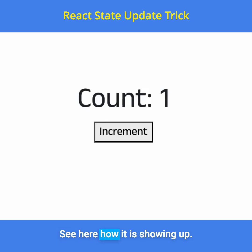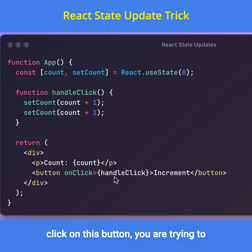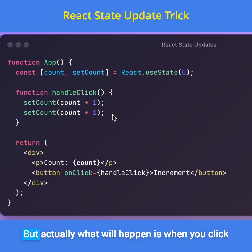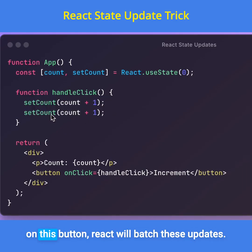See here how it is showing up. Why it is happening is, whenever you click on this button, you are trying to update the count value 2 times. But what will actually happen is, when you click on this button, React will batch these updates.